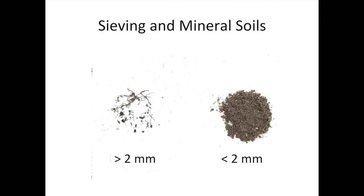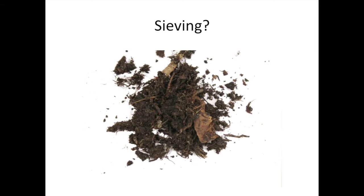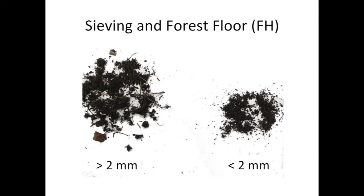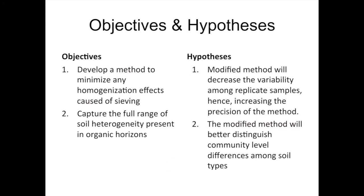For mineral soils — like an AE horizon from a coarse-textured Luvisol — when you sieve, you really don't lose a lot; maybe a few pieces of root, nothing too drastic. But when you're sieving a forest floor soil, there's charcoal, pieces of leaf litter. What goes into the standard MicroResp method is only the smaller-than-two-millimeter fraction, and everything else is lost. Those pieces of leaf litter and charcoal are probably important components of the soil being excluded from analysis. So what are you really measuring?